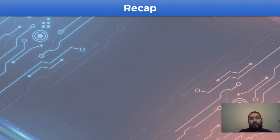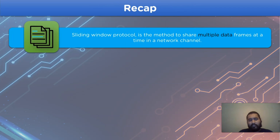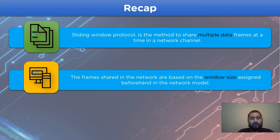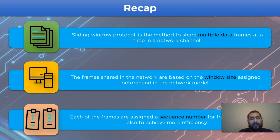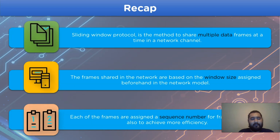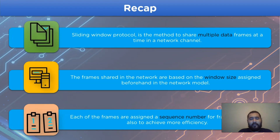Let's begin with the sliding window protocol. The sliding window protocol is a method to share multiple data frames at a time in a network channel. The frames shared in the network are based on the window size assigned beforehand in the network model. Each of the frames is assigned a sequence number for frame transmission and to achieve more efficiency in the network channel.